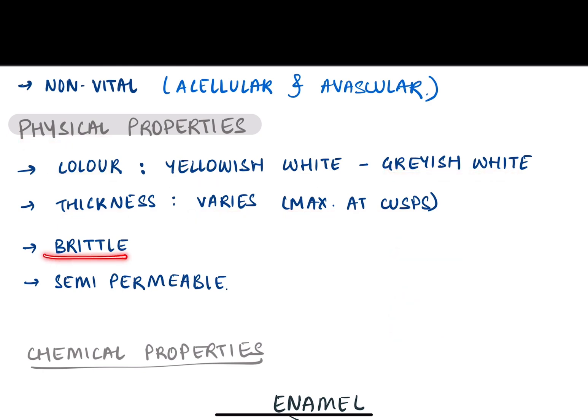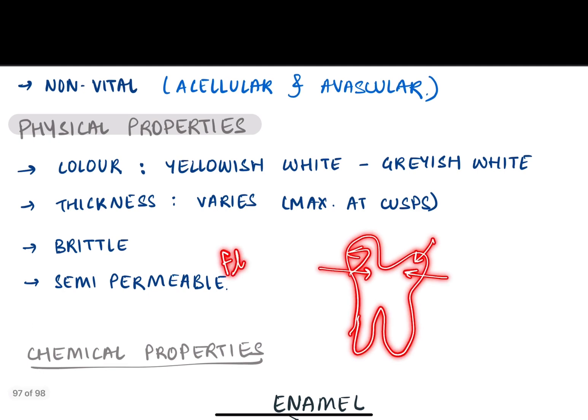It is brittle, that is, it can be broken. And it is semi-permeable, that is, substances can seep through the surface of enamel, for example, fluorides.